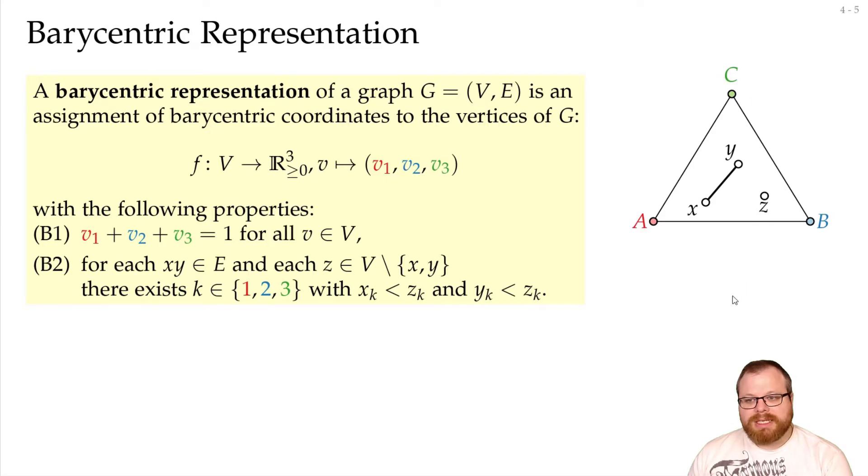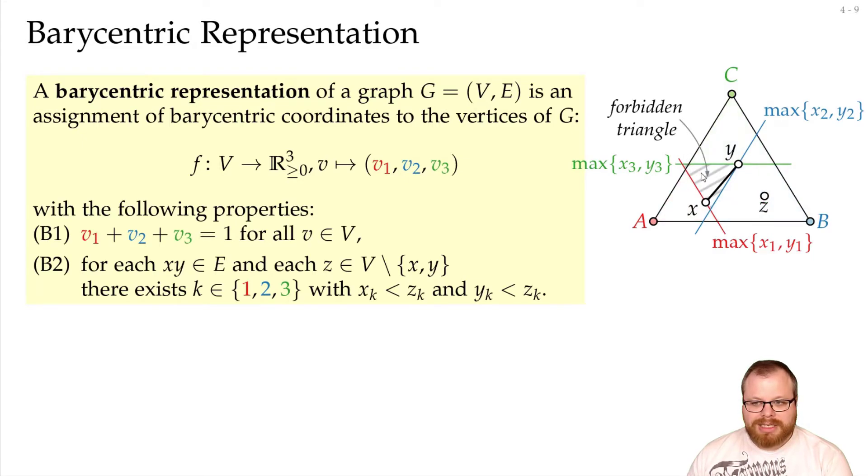What does that mean? Where can z be? If k is 1, then it has to be closer to a than x and y, so it has to be inside this triangle. Or it can be 2, then it has to be closer to b than both of them, so it can be inside this triangle. Or if k is 3, it's closer to c than both of them, so it can be inside this triangle. So our vertex z can be anywhere in these shaded areas, but it cannot lie inside this forbidden triangle here.